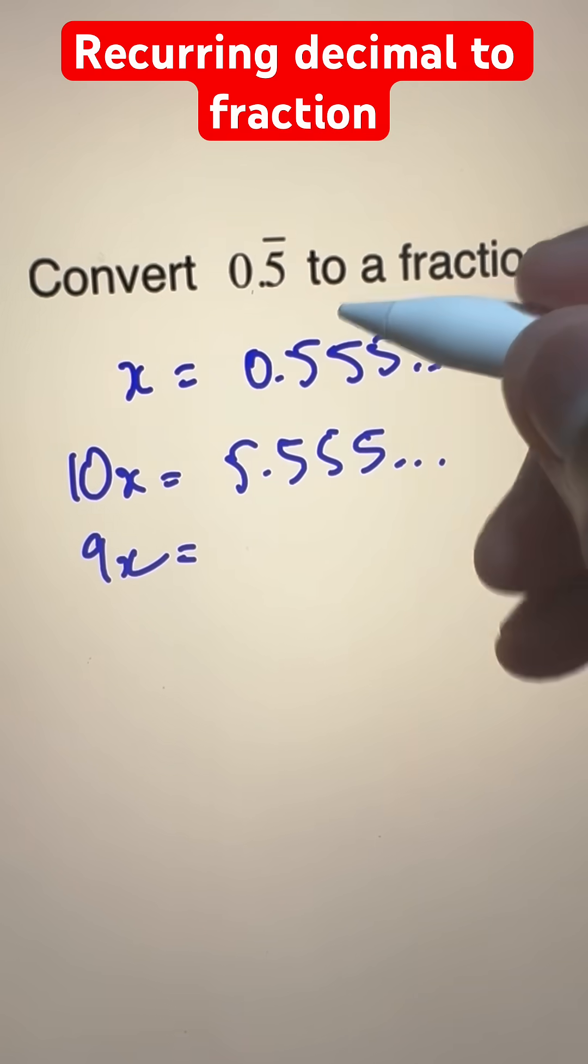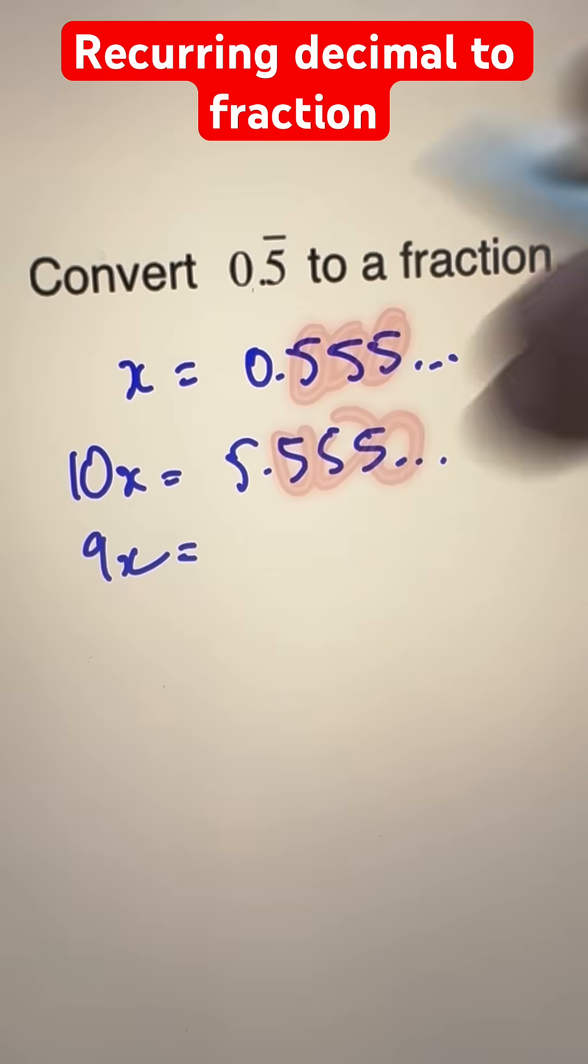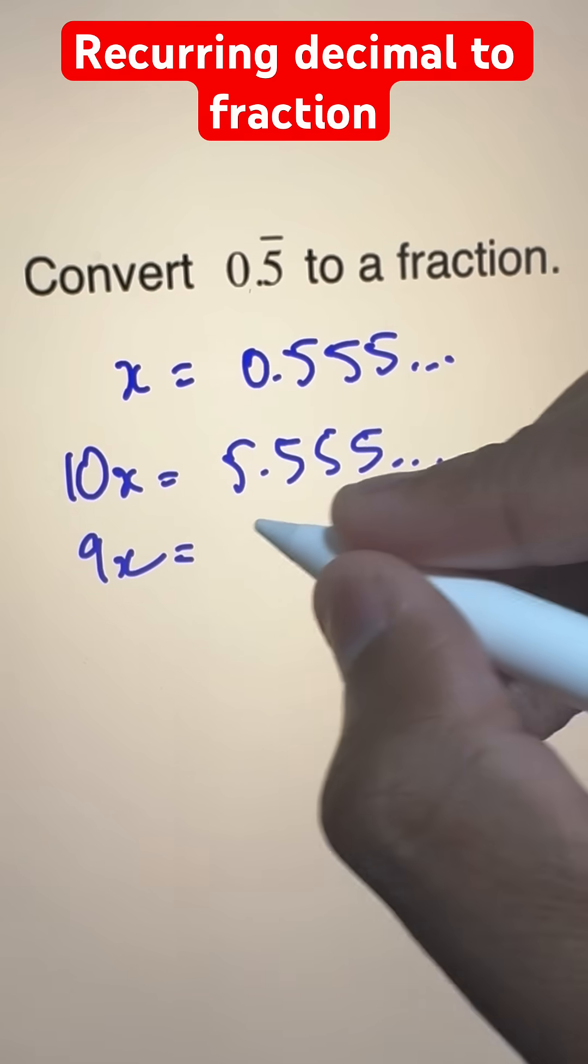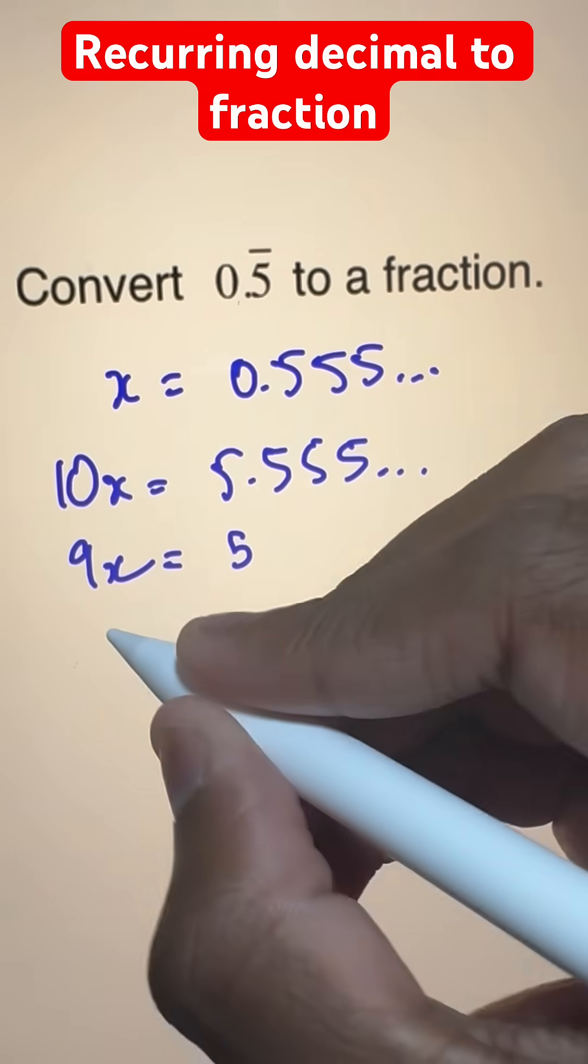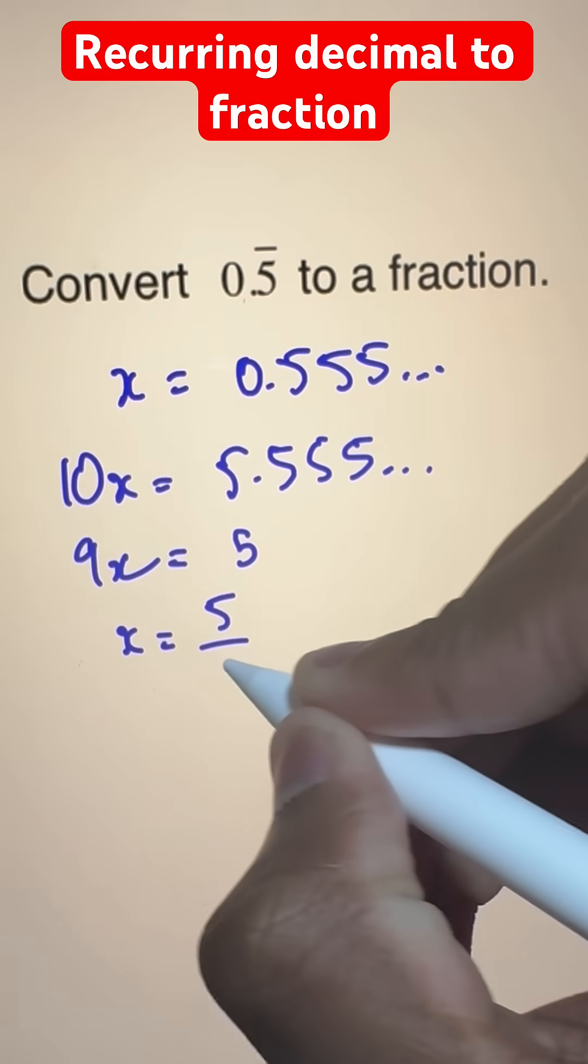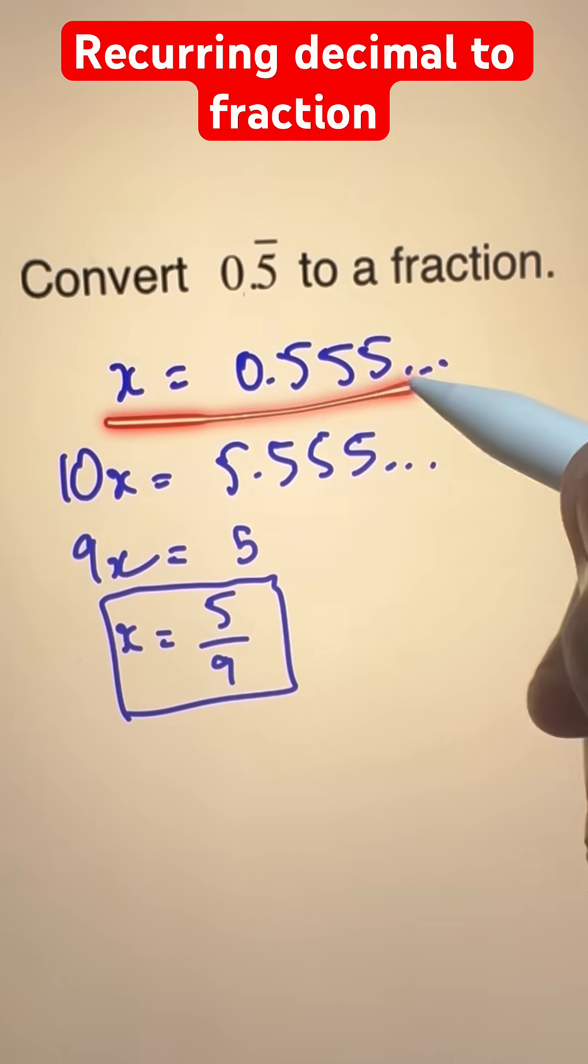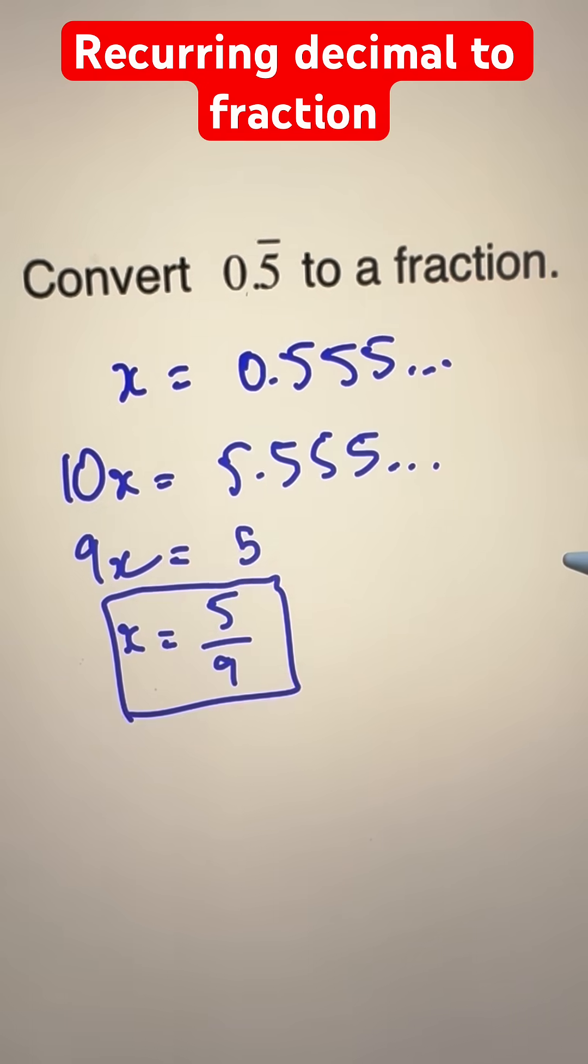we will just cancel out all the recurring 5s here. And the only thing we'll have left is 5 minus 0, which is 5. Now x is simply going to be 5 by 9. And this is our final answer since this is the original decimal. And this is what we're looking for. We converted it to a fraction.